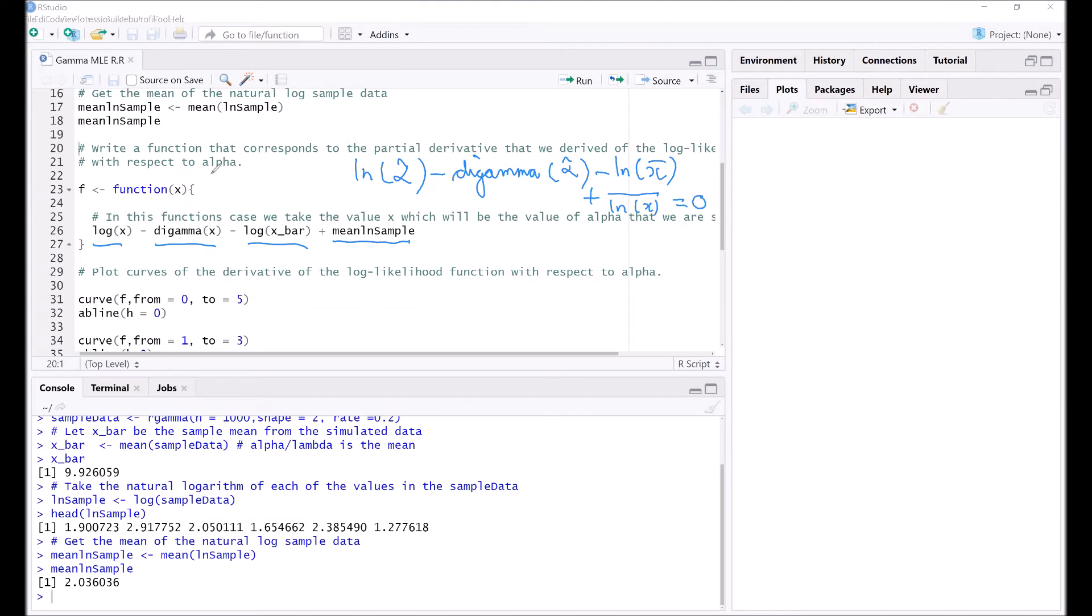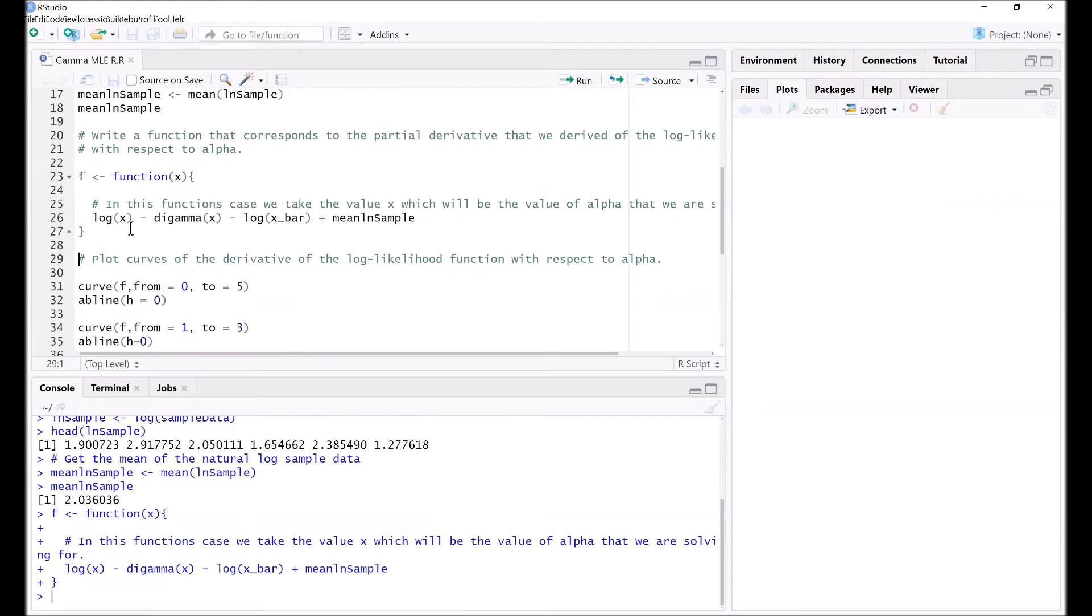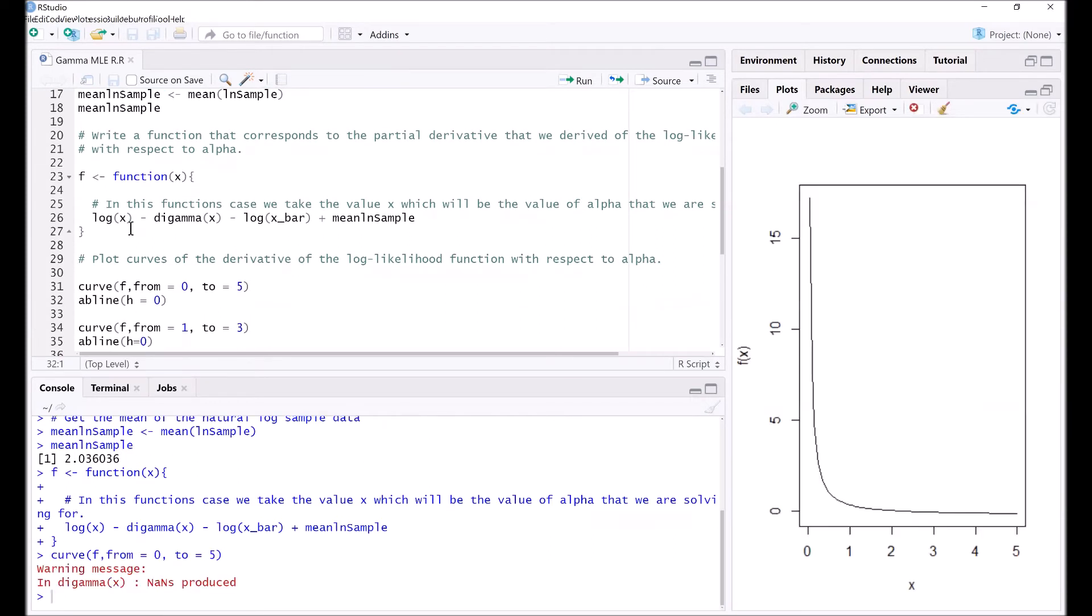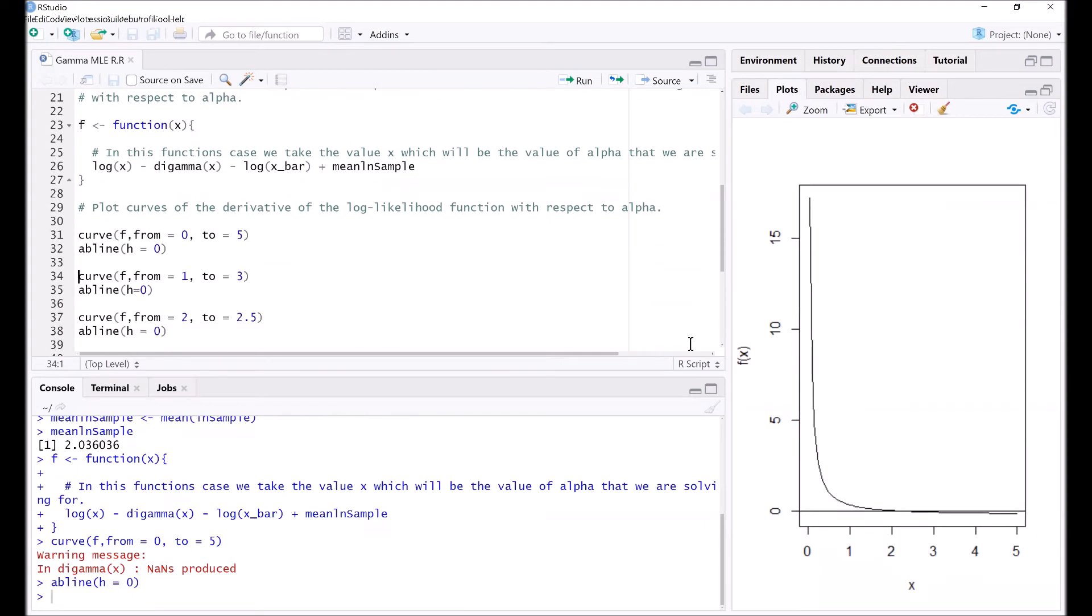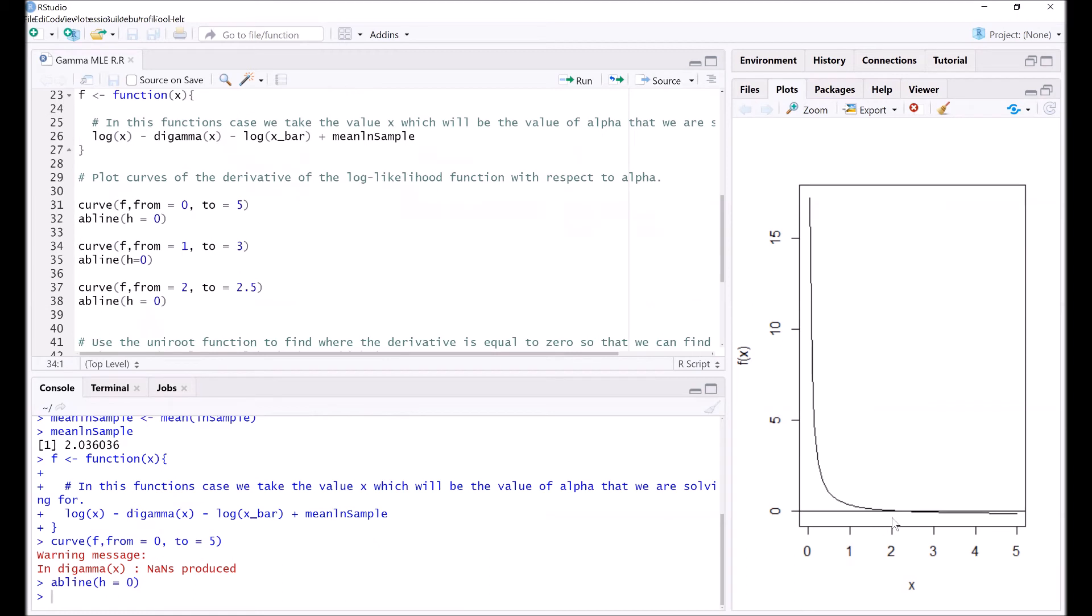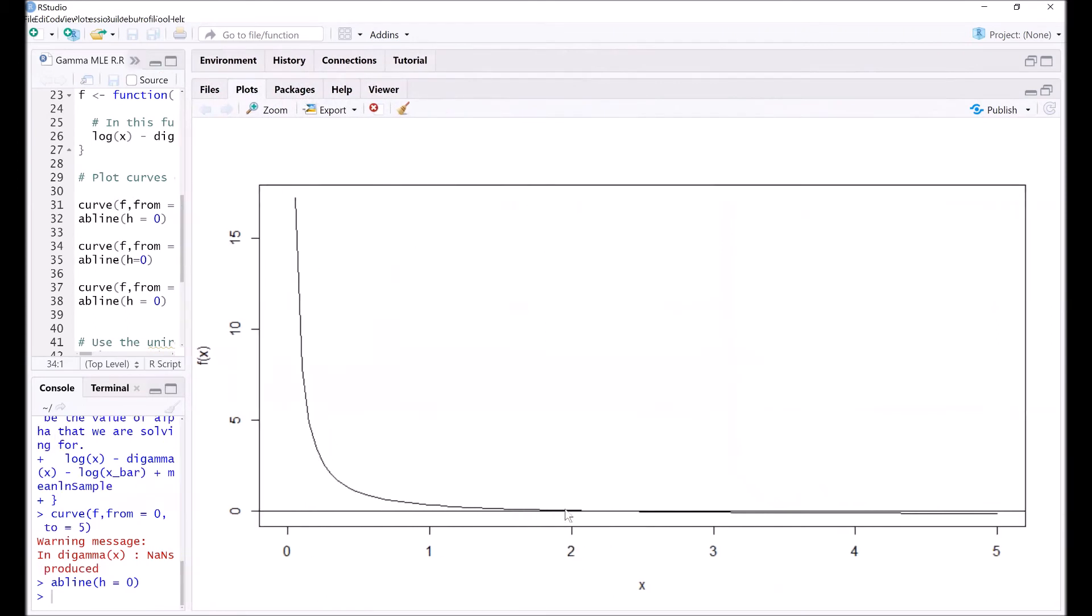So we define the function f. Now let's plot a curve from zero to five. If we add a horizontal line at y equals zero, we can see that there should roughly be an intersection at around x equals two. So let's narrow down the graph so that we can have a nicer curve being plotted.